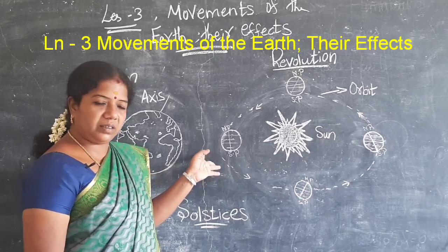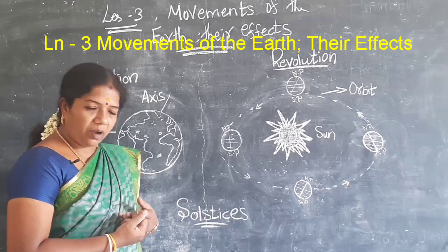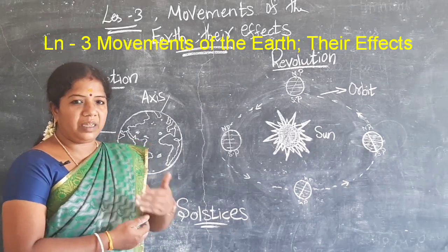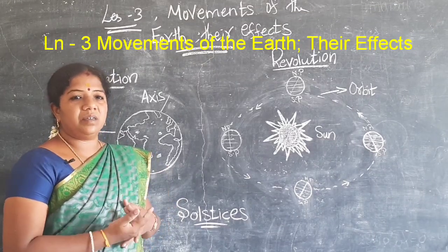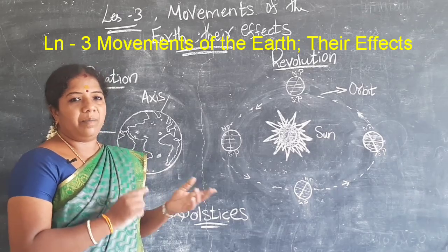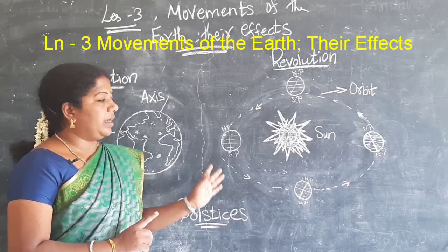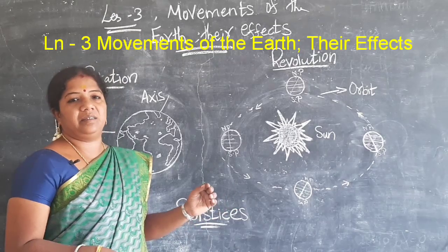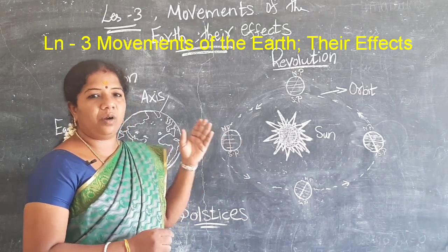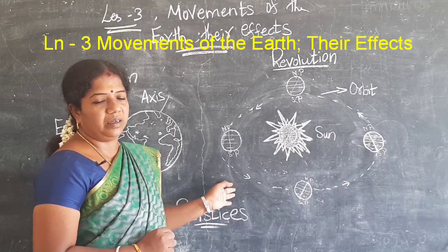It takes 365 and a quarter days, but in our calendar we have only 365 days. So what do we do with the quarter days? We accumulate the quarter days over four years — they add up to become one full day. In that particular year, we add one day to the month of February. Normally February has 28 days, but in that particular year it gets 29 days. We call that year a leap year — L-E-A-P — leap year.